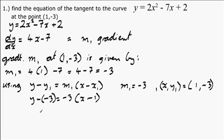Which gives us y minus minus 3, which is y plus 3, equals minus 3x plus 3. The plus 3's cancel on both sides, giving us y equals minus 3x.